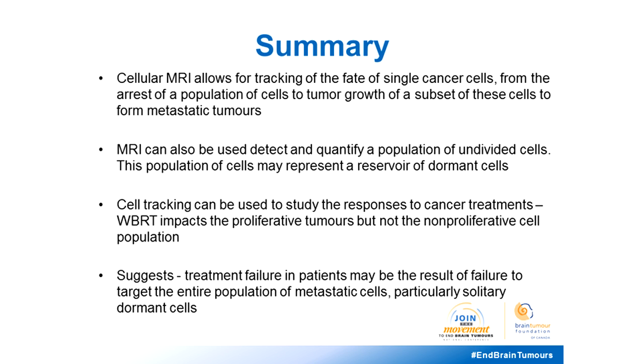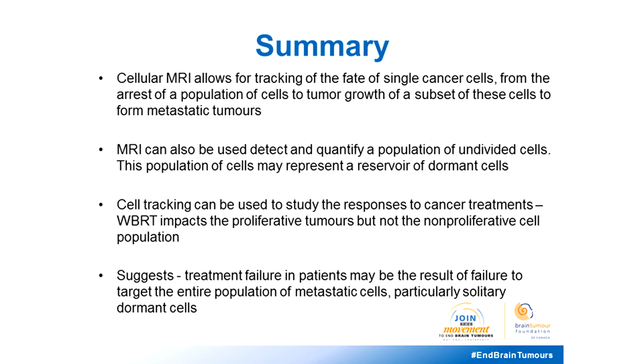To summarize: cellular MRI allows tracking of the fate of single cancer cells from their arrest in the brain through to the growth of tumors. We can detect and quantify a population of non-dividing cells that may represent a reservoir of dormant cancer cells persisting in the brain. Cell tracking also allows study of responses to cancer treatments — whole brain radiotherapy impacts proliferative tumors but not the non-proliferative cell population, suggesting that treatment failure may result from failure to treat all cells, including the dormant, non-proliferative ones.